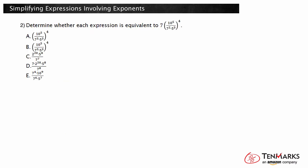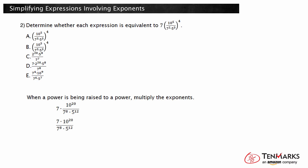Let's look at one more example. Determine whether each expression is equivalent to 7 times 10 to the fifth over 7 squared times 5 to the third, all raised to the fourth power. To simplify, start with the exponent outside the parentheses. This is a group of powers being raised to a power, so the exponents should be multiplied. This gives you 7 times 10 to the twentieth divided by 7 to the eighth times 5 to the twelfth. Multiply 7 to get 7 times 10 to the twentieth divided by 7 to the eighth times 5 to the twelfth. There are two powers with bases of 7 being divided, so subtract their exponents. The numerator 7 has an understood exponent of 1. 1 minus 8 is negative 7, so 7 to the seventh goes in the bottom of the fraction.